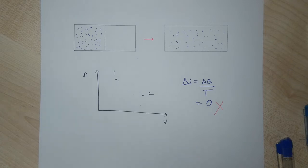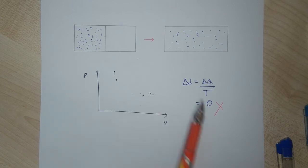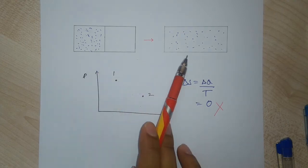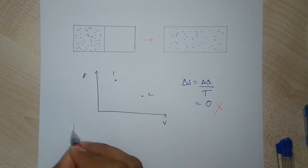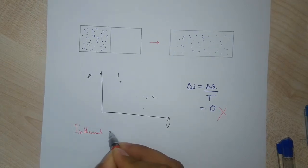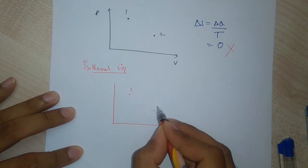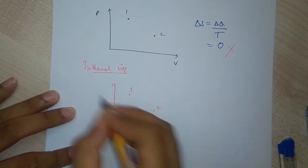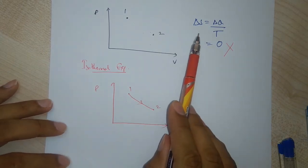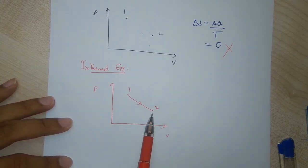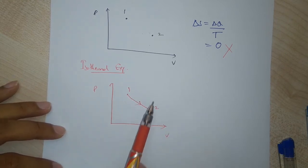However, that reasoning is wrong — the change in entropy is not zero. To determine the actual change in entropy, we use a reversible process connecting the same states one and two. Since temperature remains constant between these states, the corresponding reversible process is an isothermal expansion. The change in entropy only depends on the initial and final state, not the path taken.